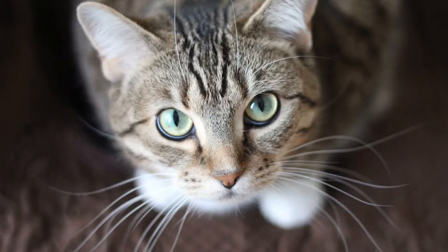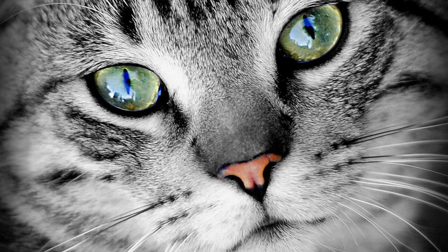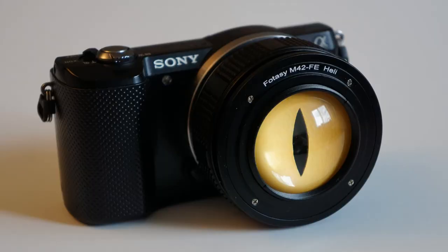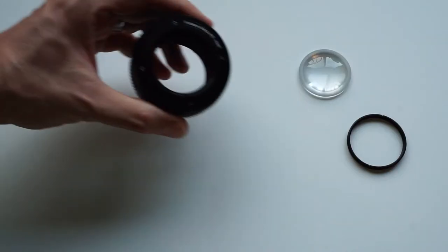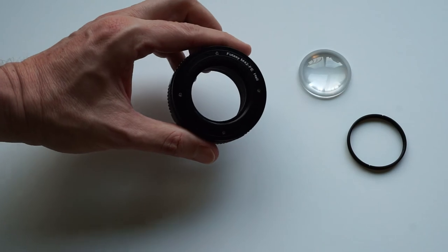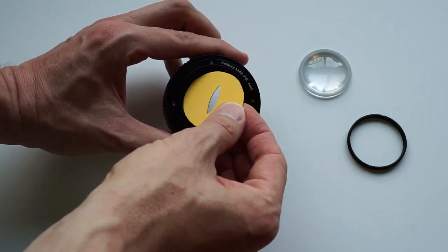Lately I was wondering why does a cat's eye look like that — why does it have those weird slit pupils instead of round ones like ours? I decided to build a special camera lens so we can see what cats see through those eyes. These are all the parts you will need, and I'll put some links in the description. This is a very easy project you can build yourself in just a few minutes.